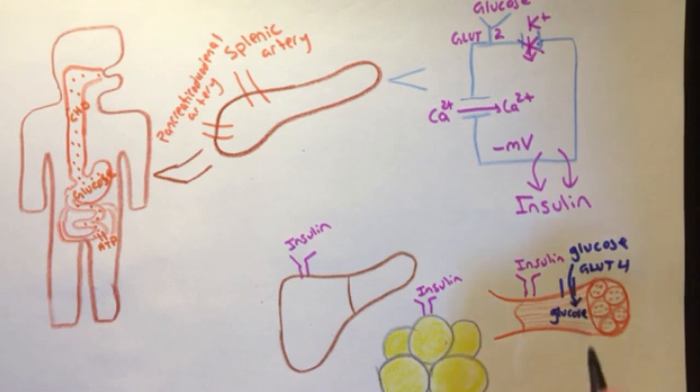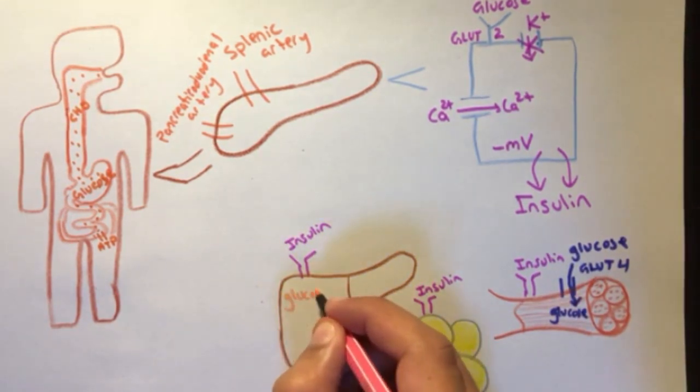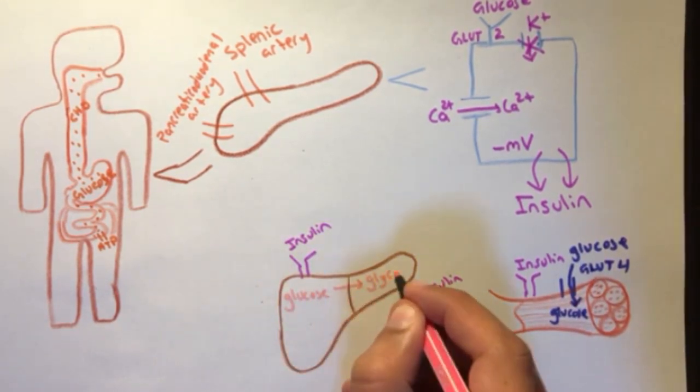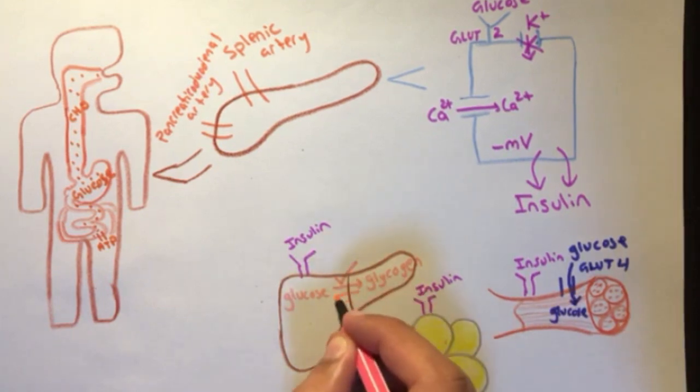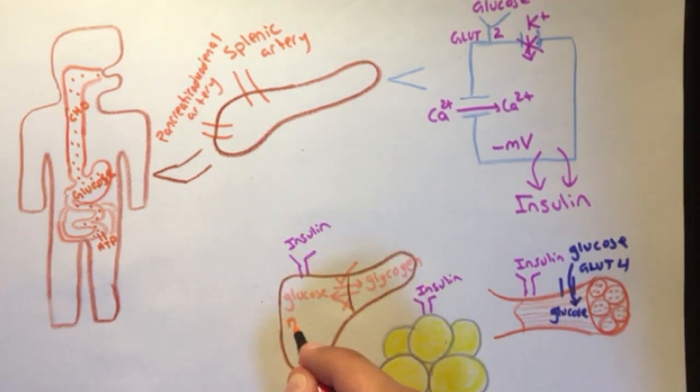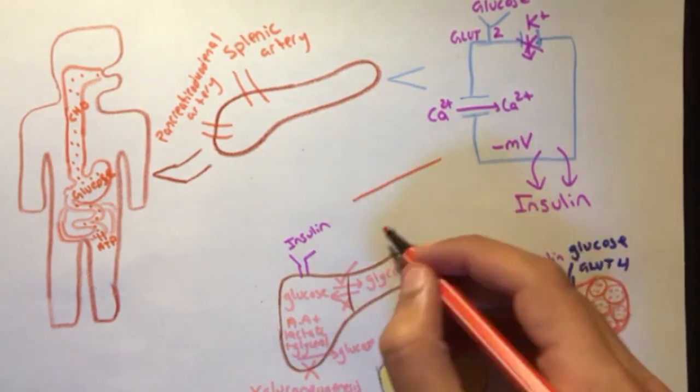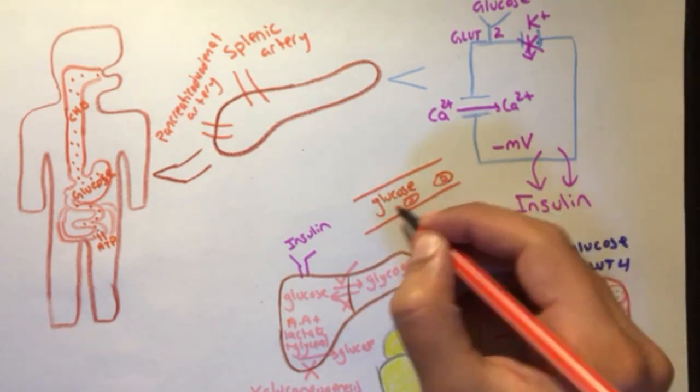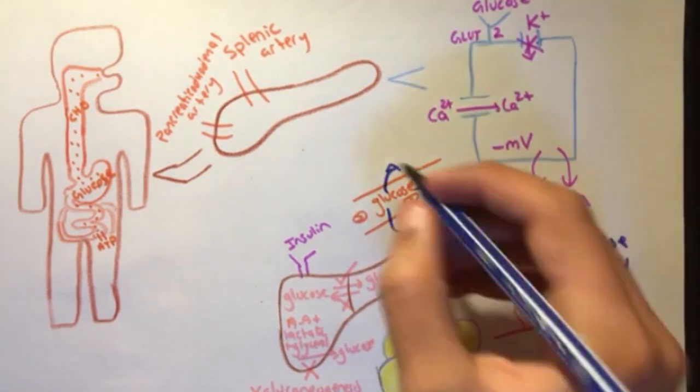It also promotes formation of glycogen, which is the main glucose store, and inhibits the process of glycogenolysis, which is the breakdown of glycogen into glucose molecules. It decreases the process of gluconeogenesis, which is the formation of glucose in the liver. All these mechanisms decrease the blood glucose levels.